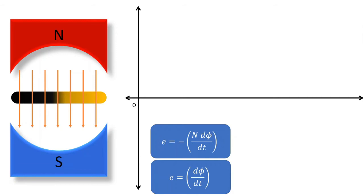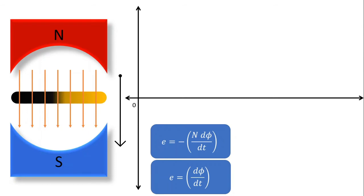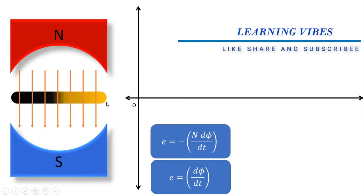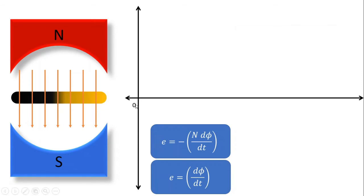At position number 1, the velocity of the conductor is parallel to the magnetic lines of force. When it is parallel to the magnetic lines of force there is no cutting of flux — the change of flux is minimum at this position. When the change of flux is minimum, the induced EMF in this conductor is also minimum, as we can see from the waveform.